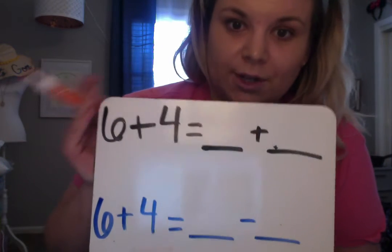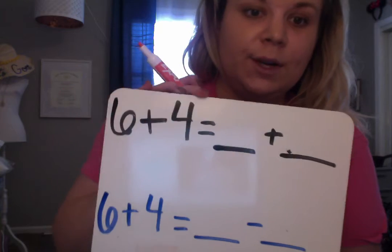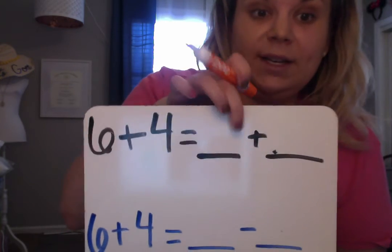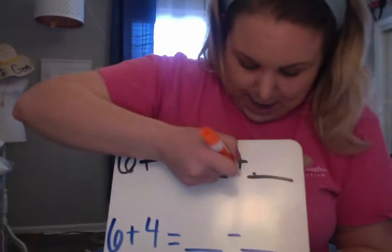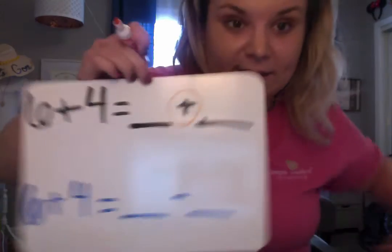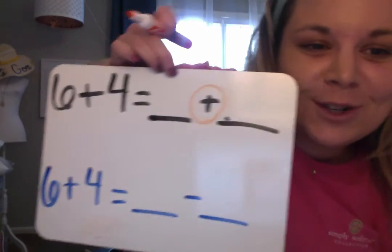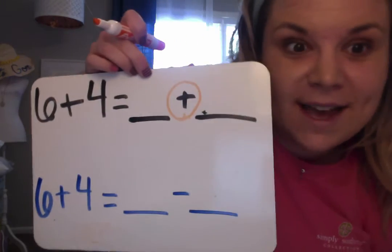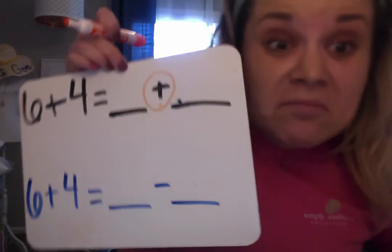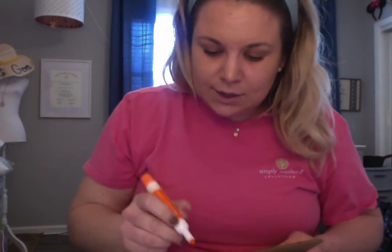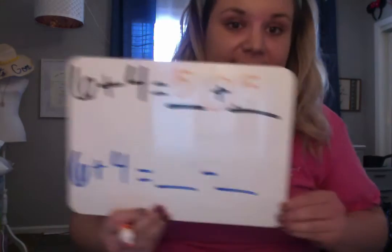So six plus four, we should all know, is a make 10 fact, right? Six plus four equals 10. So whatever we put in here also has to add to 10. Now he's barking at the dog. Hey, hey, come on, trying to help the first graders here. All right, so six plus four is a make 10 fact. What's another make 10 fact off the top of your head? Five plus five, right? So six plus four equals five plus five. That is a balanced equation.